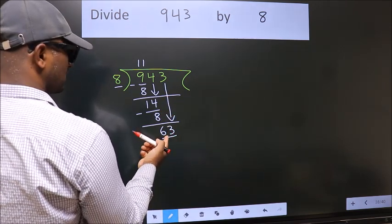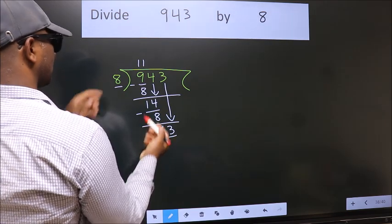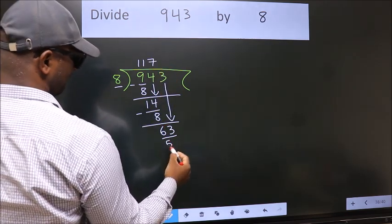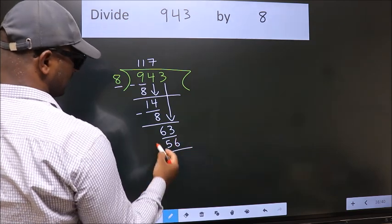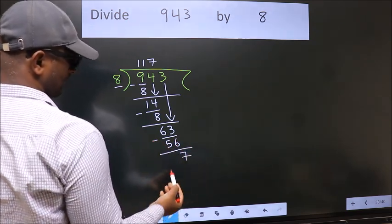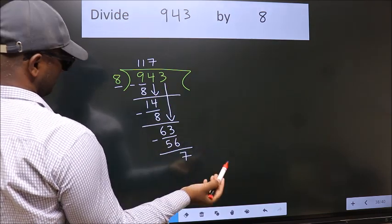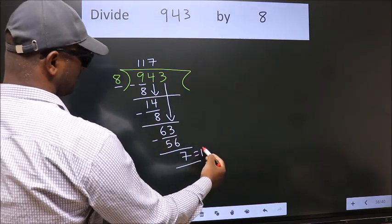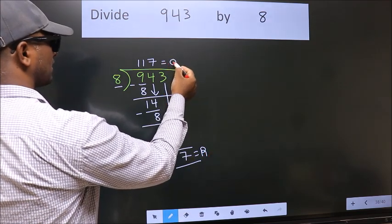A number close to 63 in the 8 times table is 8 sevens, 56. Now we subtract — we get 7. No more numbers to bring down, so we stop here. This is our remainder. This is our quotient.